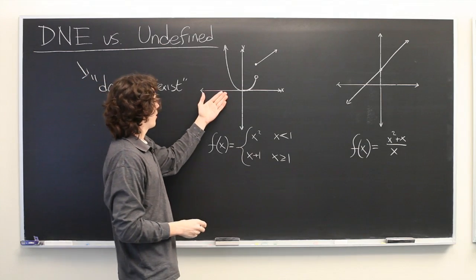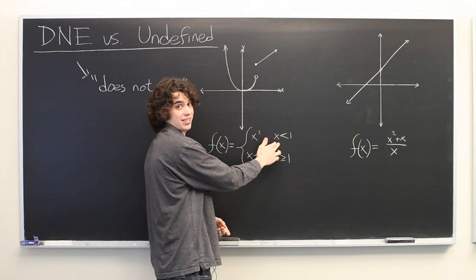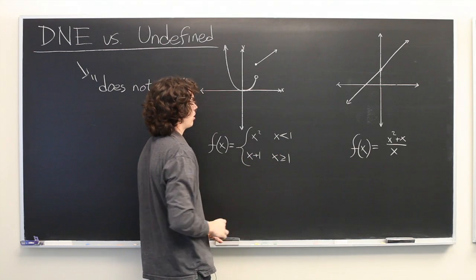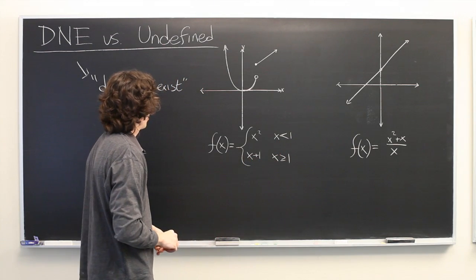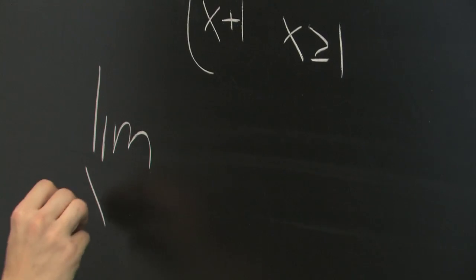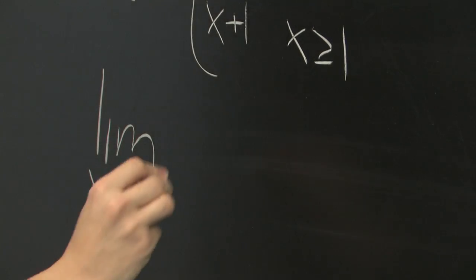So here we have a function which is given by x squared when x is less than 1, and x plus 1 when x is greater than 1. Now suppose we were asked something like, what is the limit as x approaches 1 of f of x?